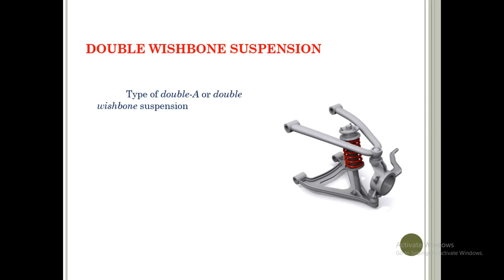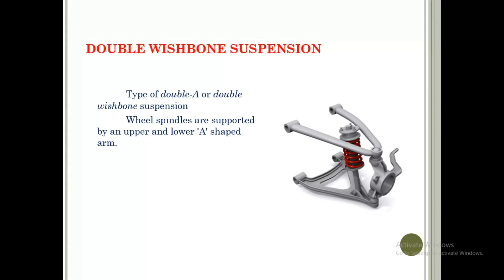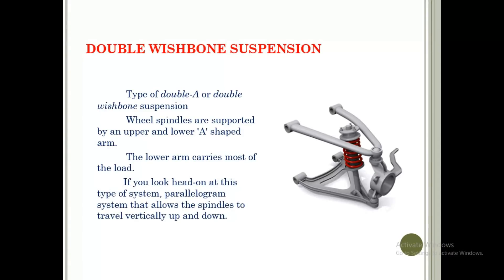The double wishbone suspension has wheel spindles supported by upper and lower A-shaped arms. The lower arm carries most of the load. Looking head-on at this system, the parallelogram arrangement allows the spindles to travel vertically up and down. It is similar in purpose to the MacPherson strut, but the design differs — the joints at the upper and lower positions change between the two systems.